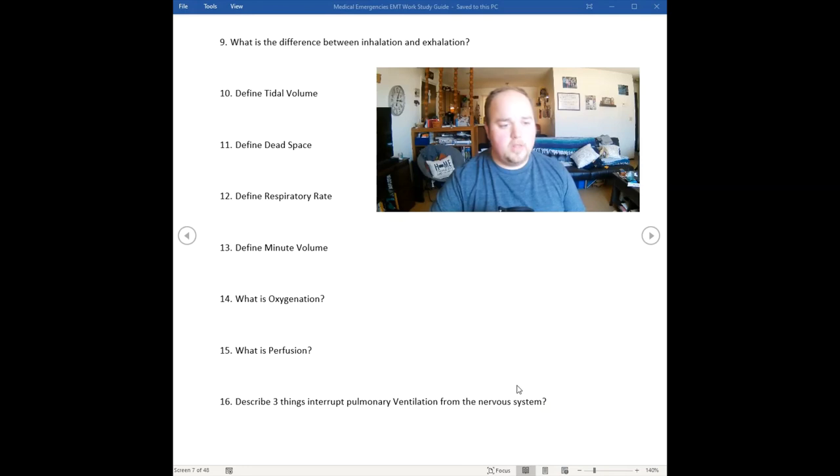Let's discuss this last one on this page. Describe three things that interrupt pulmonary ventilation from the nervous system. Three things that are going to interrupt pulmonary ventilation from the nervous system are things like drugs. If someone takes drugs that are going to inhibit their pulmonary ventilation, their ventilations, it could be some type of drug. It could be traumatic injuries to the head, as well as muscular dystrophy.